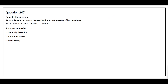Question number 247. Consider the scenario: a user is using an interactive application to get answers to his questions. Which AI service is used in the above scenario? Option A: Conversational AI. Option B: Anomaly Detection. Option C: Computer Vision. Option D: Forecasting. The correct answer is option A, Conversational AI.